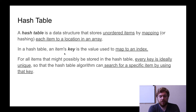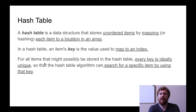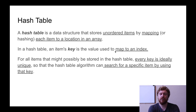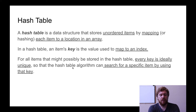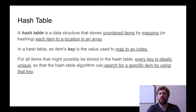In a hash table, an item's key is the value used to map to an index. This will make more sense when we talk about what a hash function is. The key is used to access an index in the array. For all items stored in the hash table, every key is ideally unique so that the algorithm can search for a specific item by using that key.